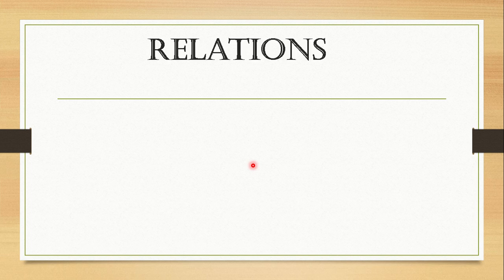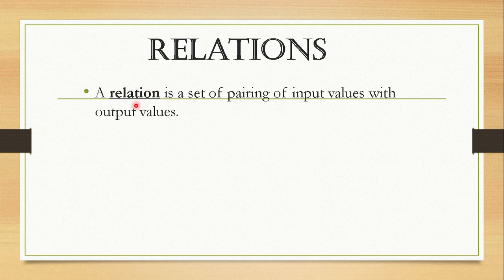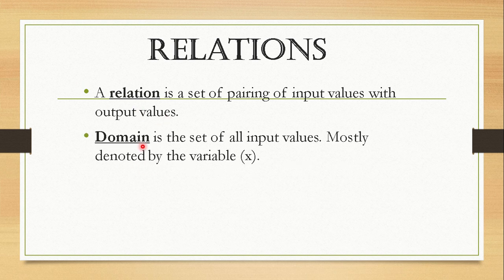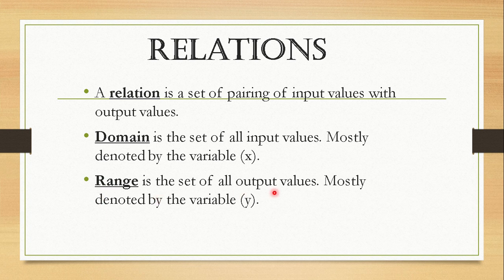Now all ears should be ready as we start with our definition of terms. We have here a relation. A relation is a set of pairing of input values with output values. Moving on with domain — domain is the set of all input values, mostly denoted by the variable x. Range is the set of all output values, mostly denoted by the variable y. I want you to take note of the following definitions: relation, domain, and range. These definitions are very crucial as we move on to our next slide.